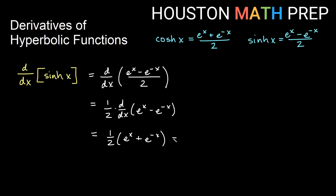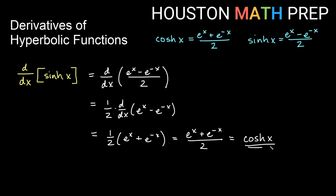So that's going to change the sign, giving us times negative 1. We'll get this expression, and this might look familiar because it matches something we have exactly on the screen right now — we have e to the x plus e to the negative x over 2. So it turns out that the derivative of sinh x, as you might have expected, is cosh of x. That's our first one.